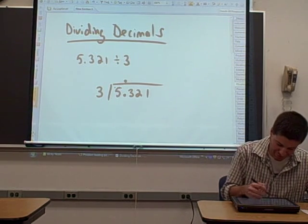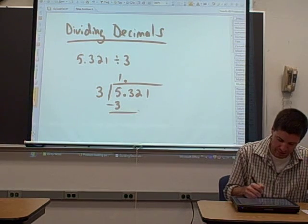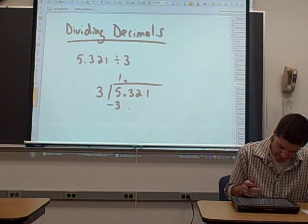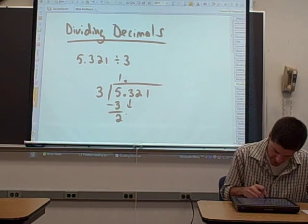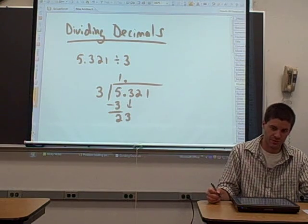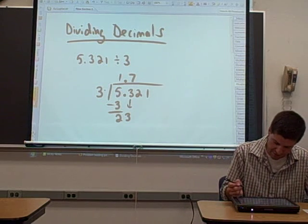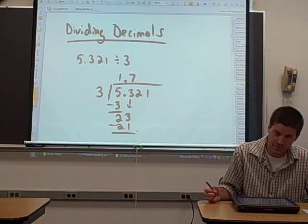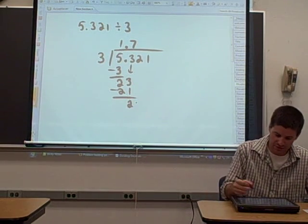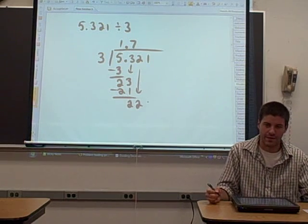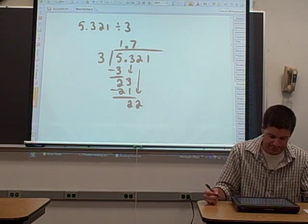So let's see how many times does 3 go into 5? 1. Multiply the 1 by the 3 and subtract. 5 minus 3 is 2. We're just going to bring down the 3. Then how many times does 3 go into 23? It goes in 7 times. Multiply the 7 times the 3. 21. Subtract and we get 2. We bring down the 2. We're just doing long division now. Completely ignoring the decimals once we've put it in our answer.